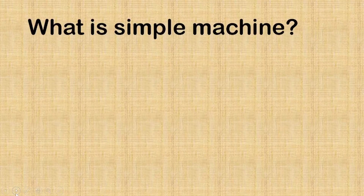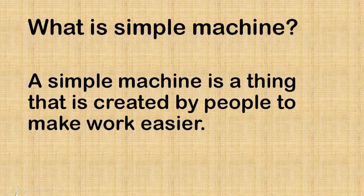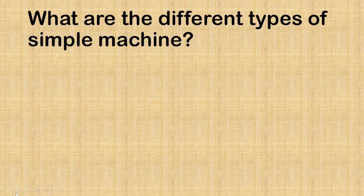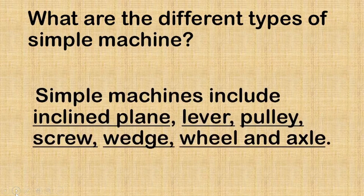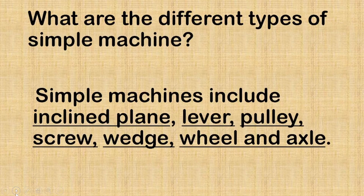What is a simple machine? A simple machine is a thing that is created by people to make work easier. What are the different types of simple machine? Simple machines include inclined plane, lever, pulley, screw, wedge, and wheel and axle.